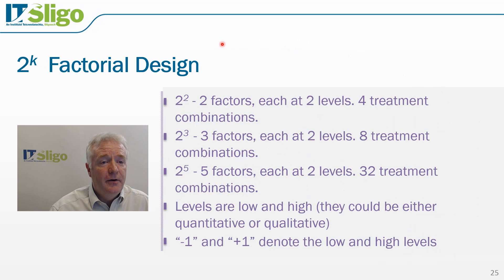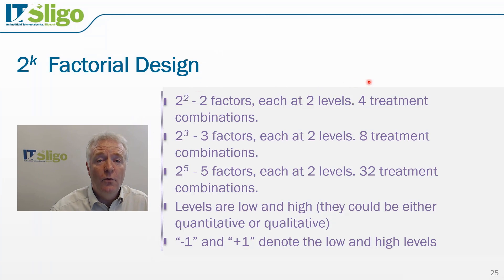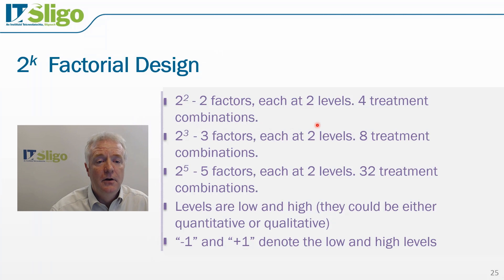Let's take the 2 to the power of k factorial design, where k refers to the number of factors. A 2 to the power of 2 design means that we are evaluating two factors at two levels. 2 to the power of 2 equals 4, so that tells us our four treatment combinations, or four experiments, associated with evaluating two factors at two levels. A 2 to the power of 3 means we will evaluate three factors at two levels — 2 to the power of 3 equals 8, so we conduct eight treatment combinations or eight experiments, and so on.